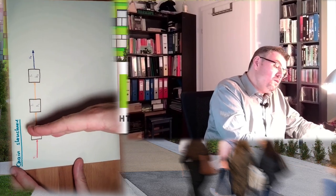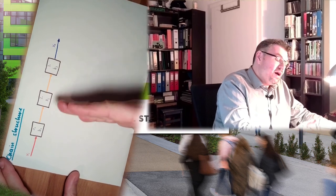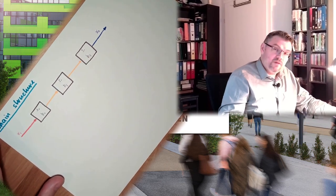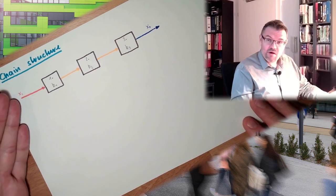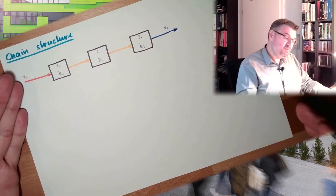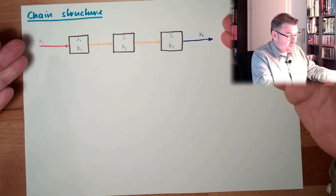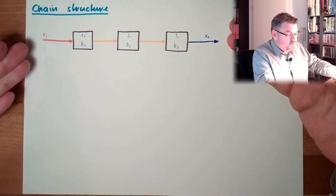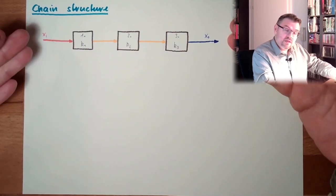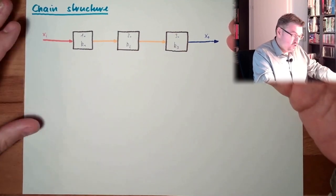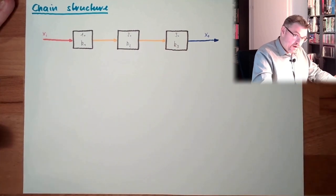So this could be a measurement chain. We have one element after the other, and the output of one element is the input of the next element. So here we have our Xi in our measurement system, and here we have our XO. This is the physical quantity I want to measure.